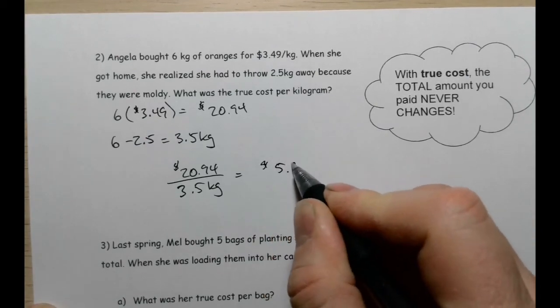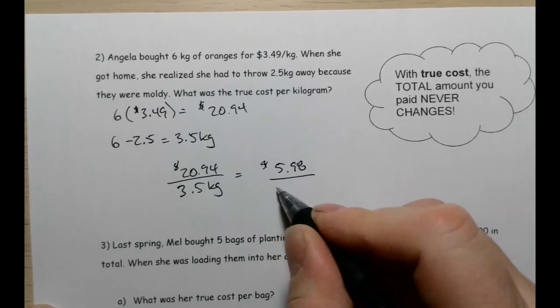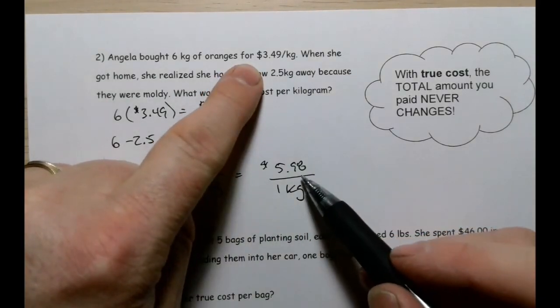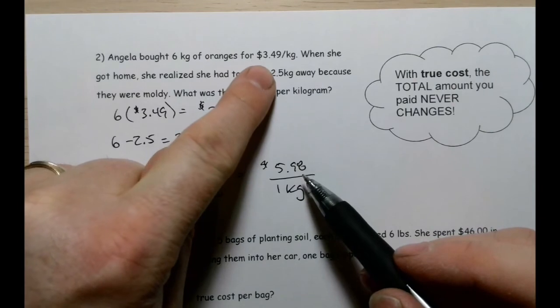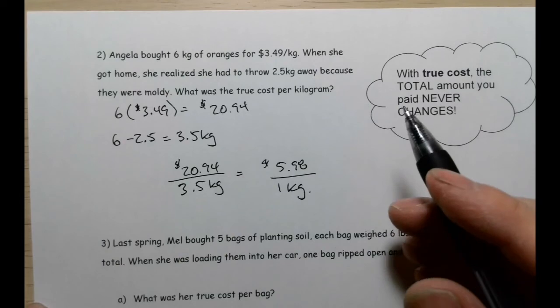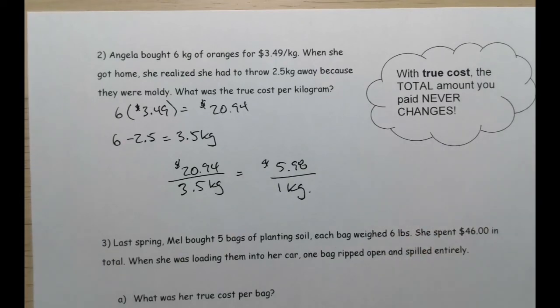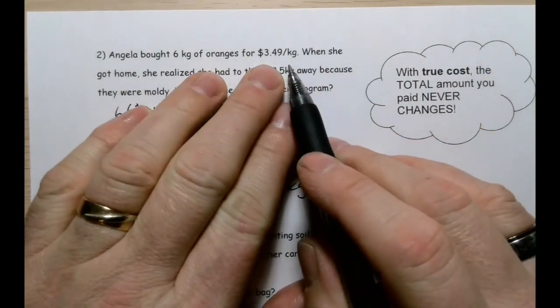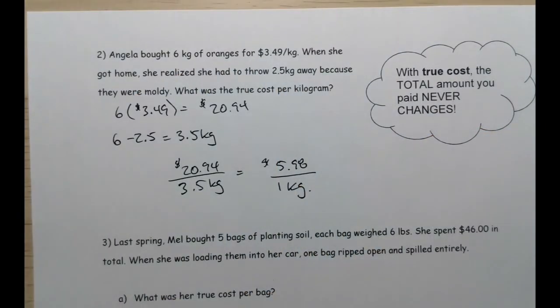Now I don't want this to be confusing here. It's not like this happens all the time. If she got home and all of the oranges were okay, not a problem, she paid $3.49 per kilogram and that was the true cost. It's only if there's something that forces you to actually readjust the amount and you actually end up with less than you thought you should have, that's where we run into this problem and the true cost is different.